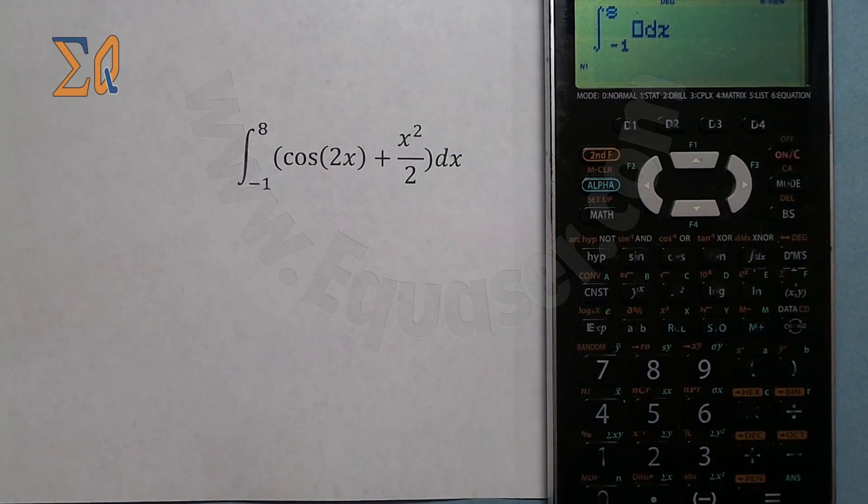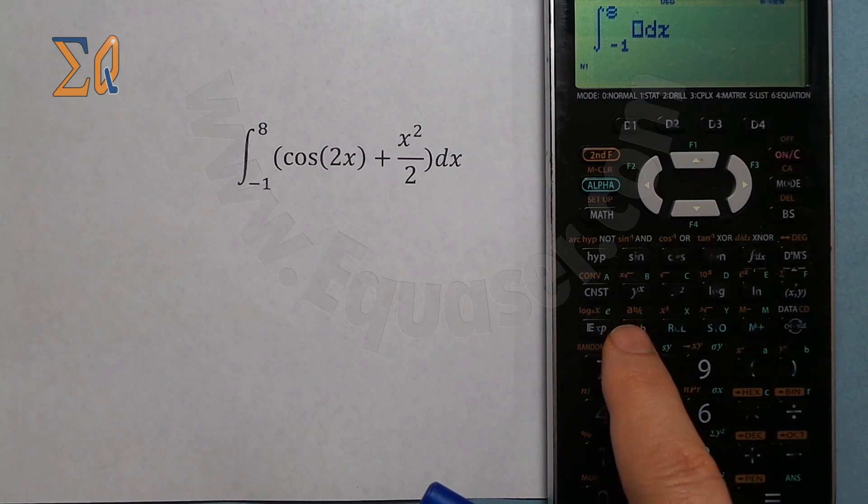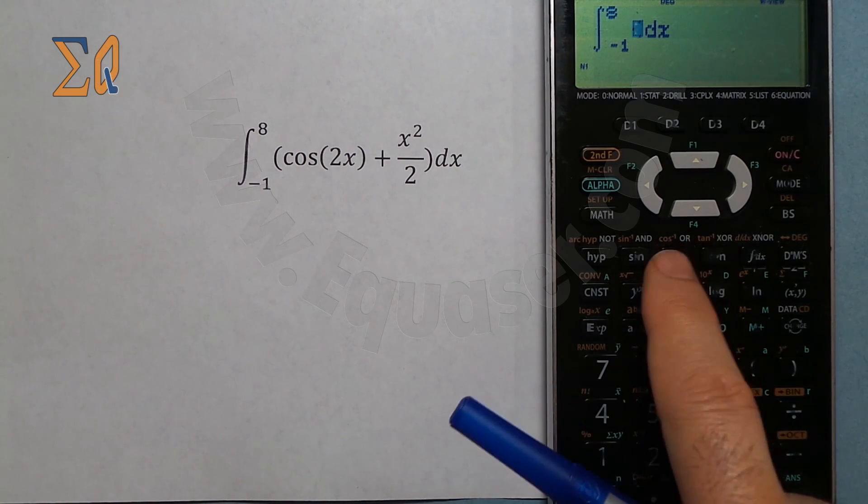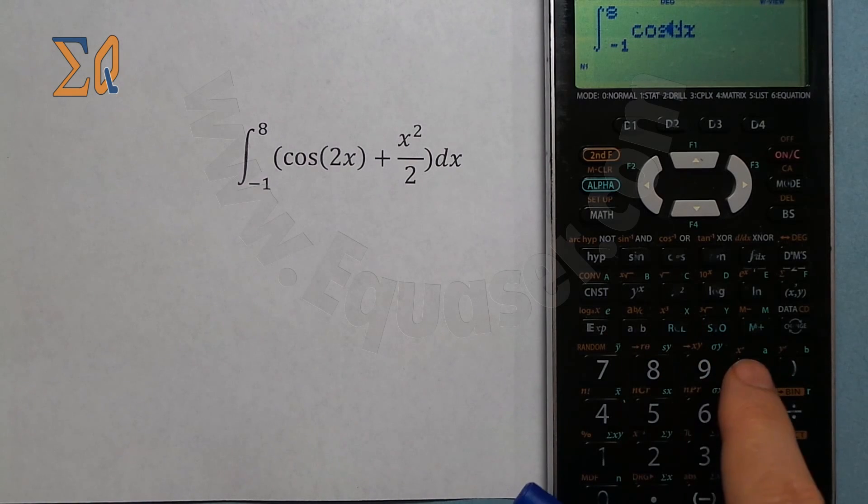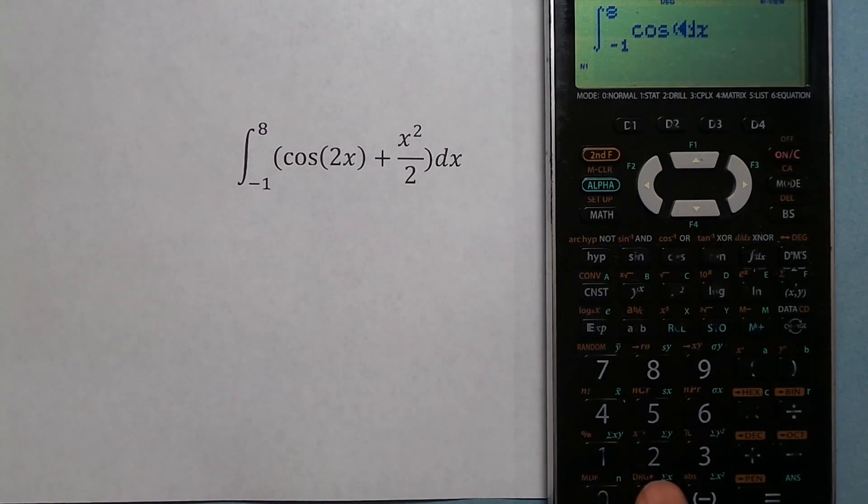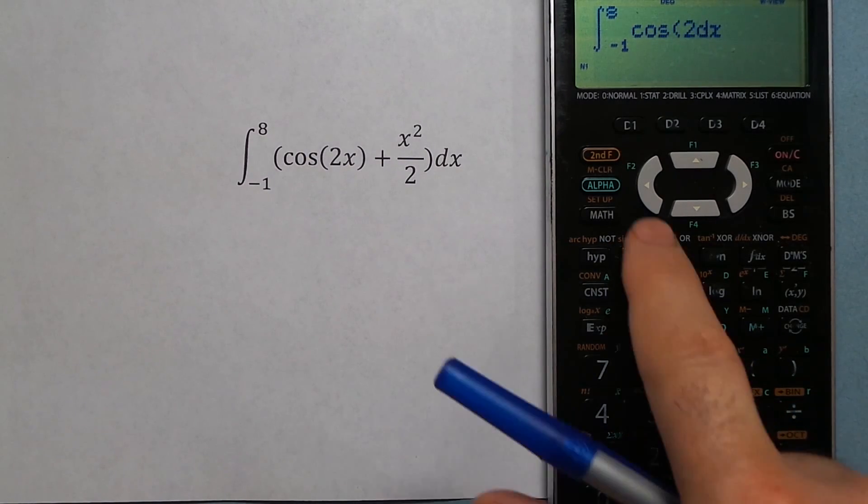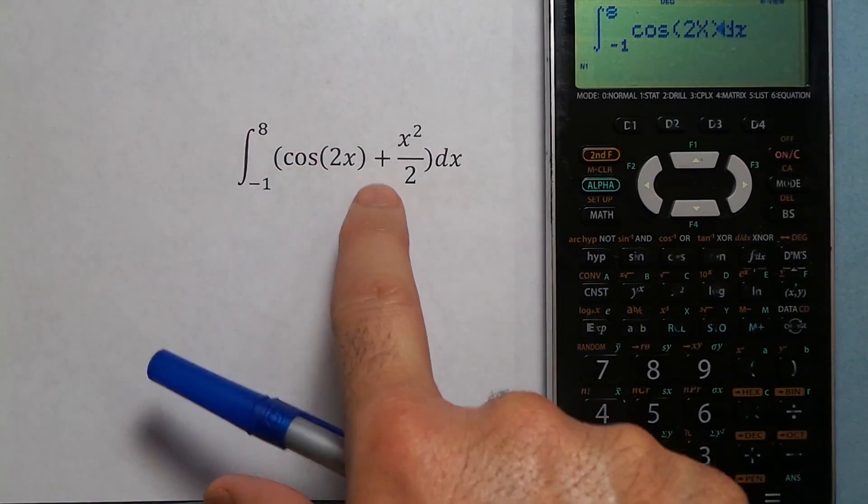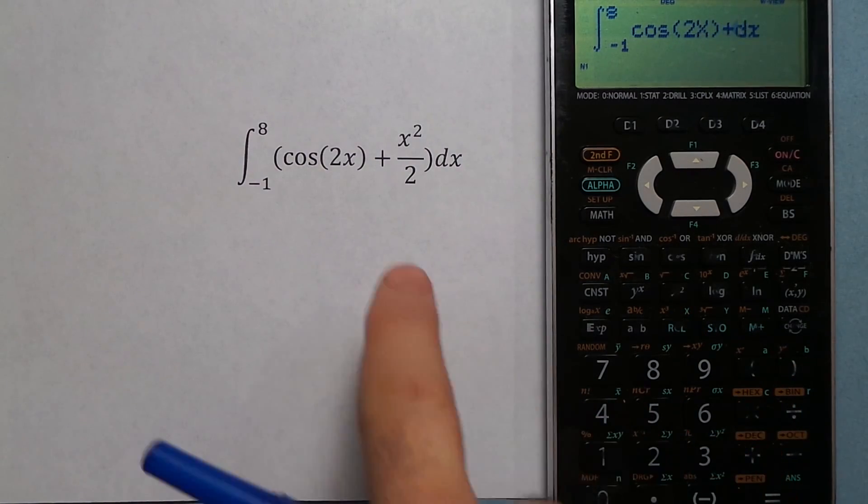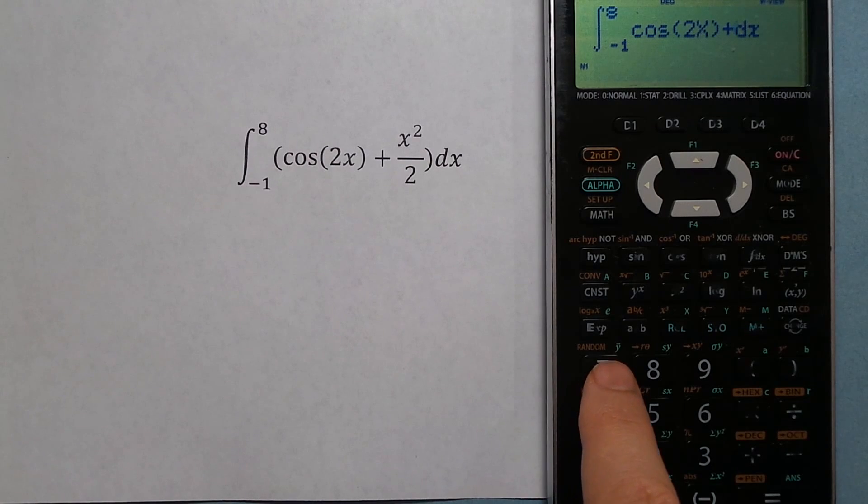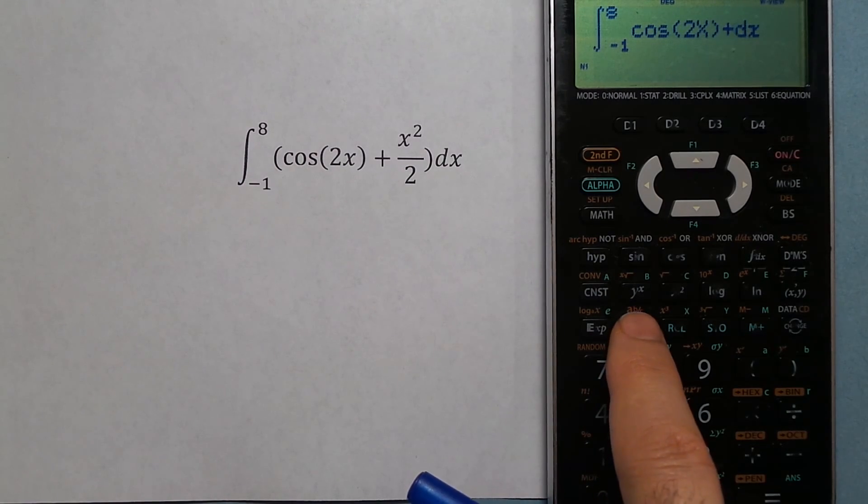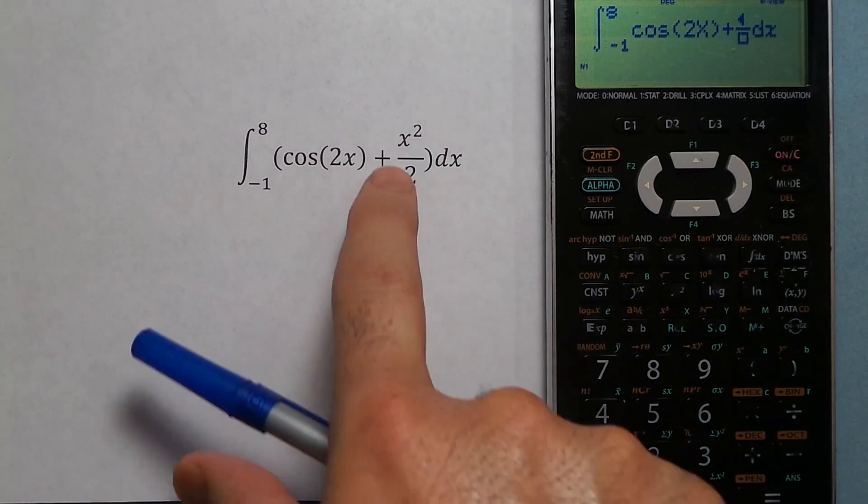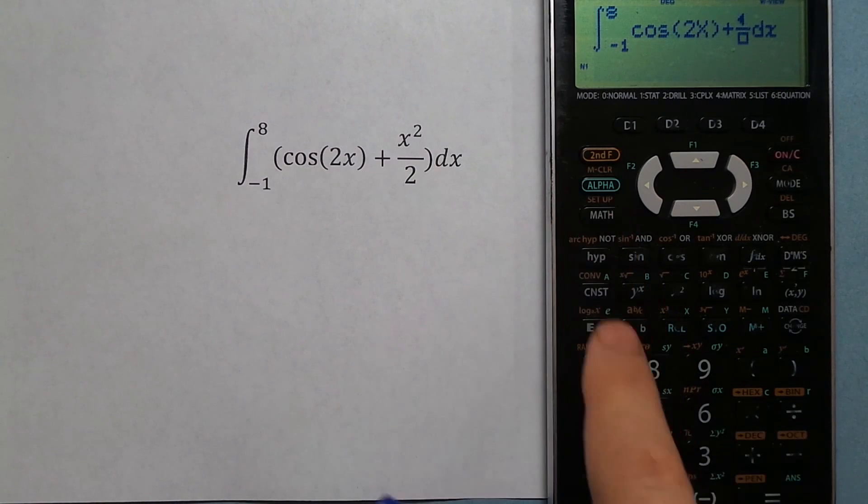Cosine of—that is my cosine, open up parenthesis, 2, and then x. For x I press alpha and x, and then close it, plus. Now this is x² over 2, so at the top I enter x², alpha and then x. I press the wrong button—x²—and then with a lower arrow.